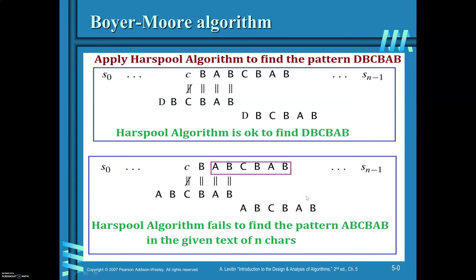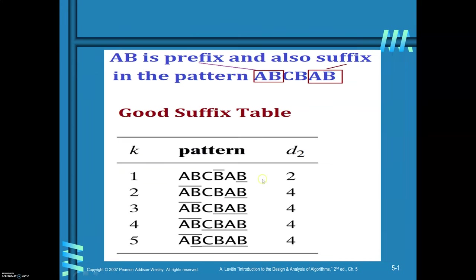In order to address this scenario, look here. A, B, C, B, A, B is the pattern you are searching in the given text. Here, A, B is a prefix and it is also a suffix. When you have a prefix that is also a suffix in the pattern, you are required to use a good suffix table.